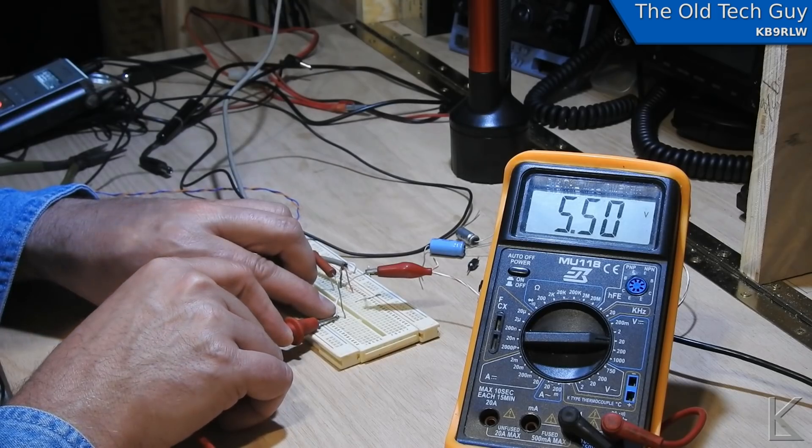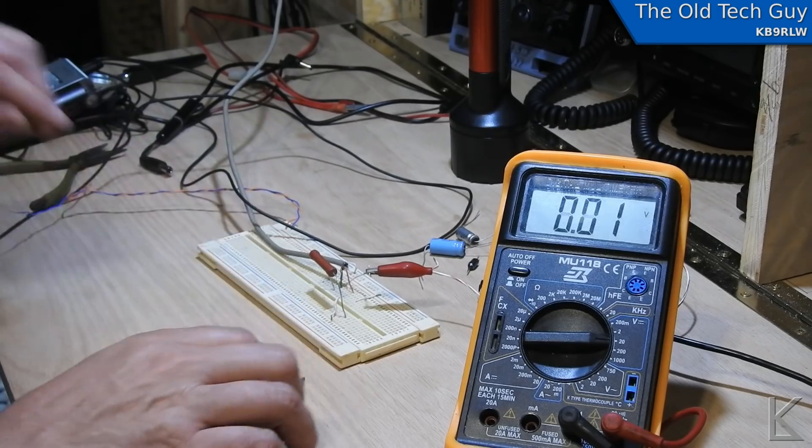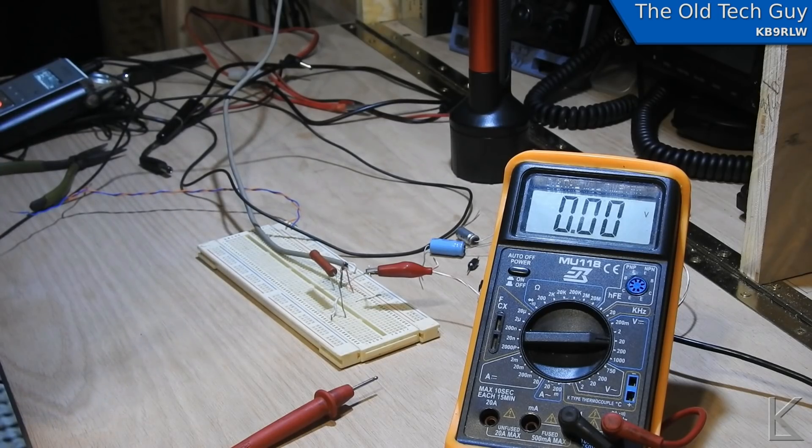Instead of seeing 4.6 or so volts we're seeing 5.5 here at the output. But going up half a volt is not going to hurt anything USB wise. Everything's going to have a tolerance to be able to tolerate up like I say a volt or so over voltage, so half a volt is nothing.